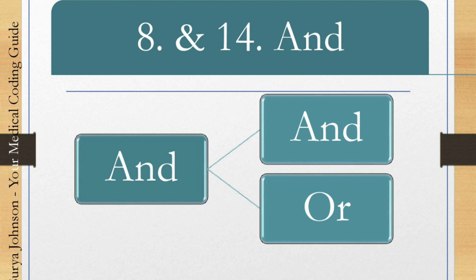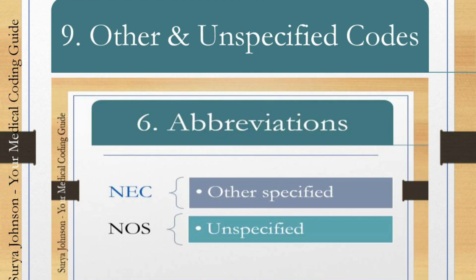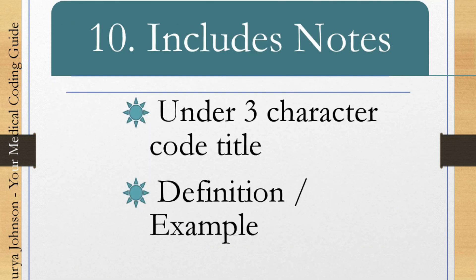Convention 8 and 14 address the word AND. In the ICD-10-CM coding book, AND is considered to mean 'and' or 'or.' Convention 9, other and unspecified codes, was already covered under the sixth convention on abbreviations — what is 'other' and what is 'unspecified' applies the same way here.